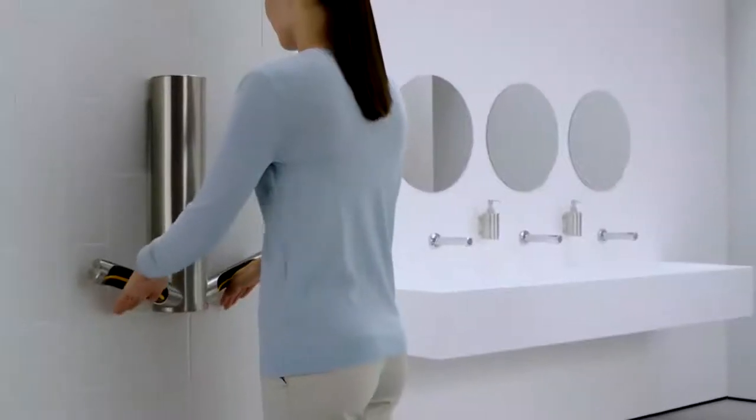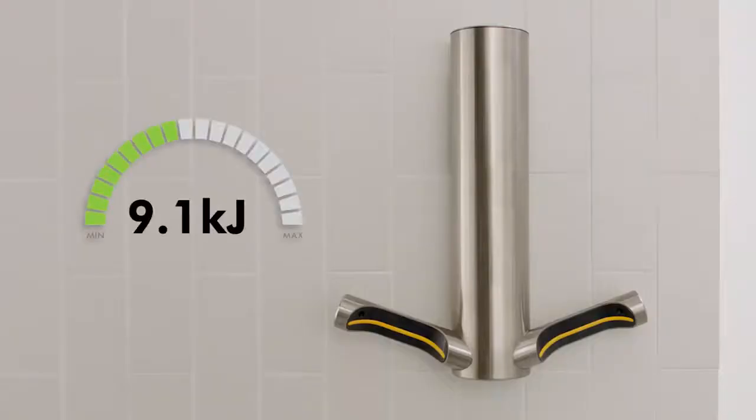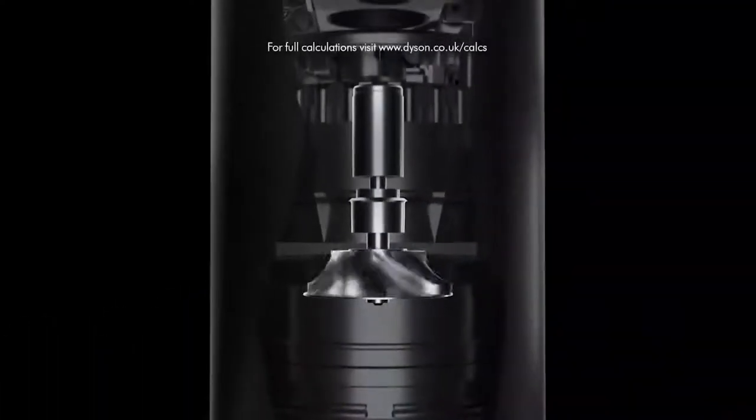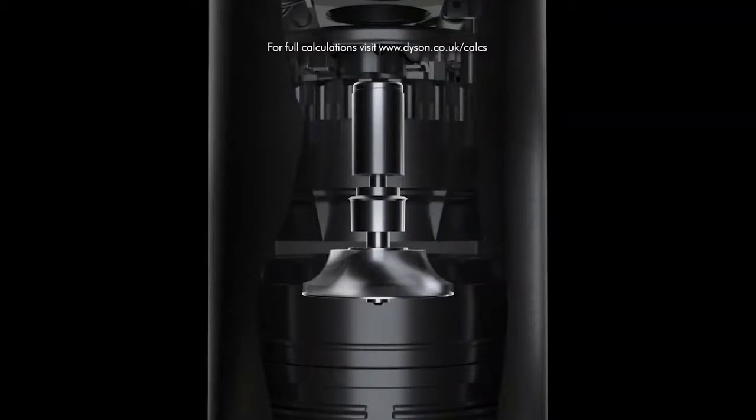Our latest hand-drying technology uses just 9.1 kilojoules of energy per dry in eco-mode. Powered by the Dyson Digital Motor V4, it costs up to 99% less to run than paper towels.